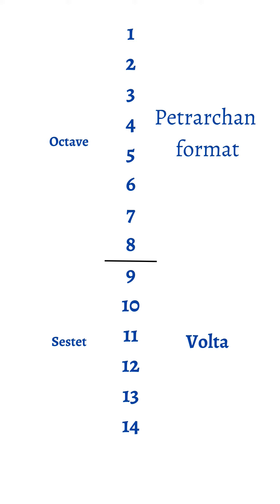Now in a Petrarchan sonnet, the 14 lines are divided into two units. There's the first eight lines, the octave, and the last six lines, a sestet. The sestet is the volta. So the volta comes much sooner in Petrarchan sonnets — it's more like at the 60% mark where the poet kind of changes directions, changes ideas, or changes tone.